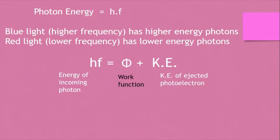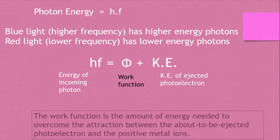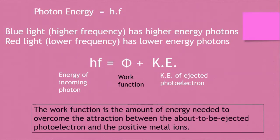So as a reminder: photon energy equals HF — Planck's constant times the frequency. Blue light has a higher frequency than red light, so blue light has higher energy photons; red light has lower energy photons. HF is the energy of the incoming photon. That goes towards the work function — the amount of energy needed to overcome the attraction between the about-to-be-ejected photoelectron and the positive metal ions. If there's any energy left over, it goes towards the kinetic energy of the ejected photoelectron.